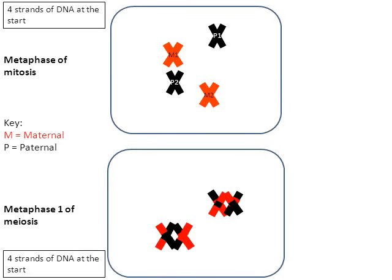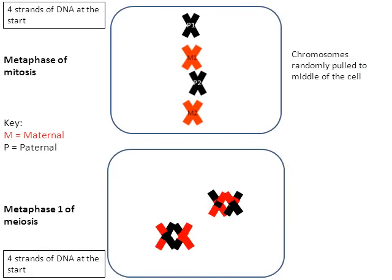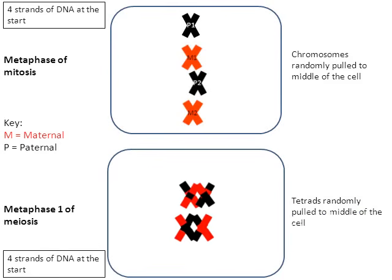Now when we go on to the next stage called metaphase, looking at the top — metaphase of mitosis — the four chromosomes in the animation are randomly pulled to the middle of the cell. In metaphase number one of meiosis, those two tetrads are going to be pulled randomly to the middle of the cell. Remember, the spindle fibers are what's pulling the chromosomes.